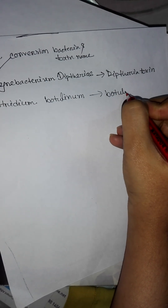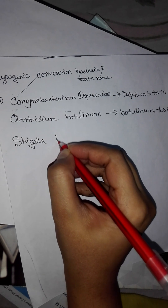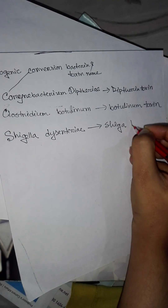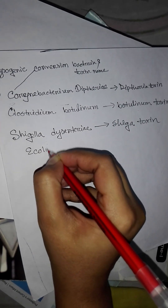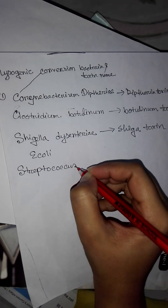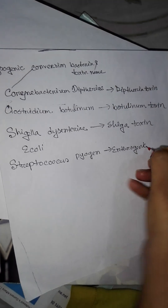Clostridium botulinum produces the botulinum toxin. Shigella dysenteriae produces the Shiga toxin. Streptococcus pyogenes produces the erythrogenic toxin.